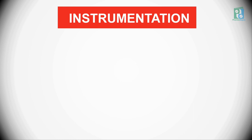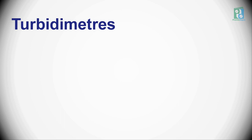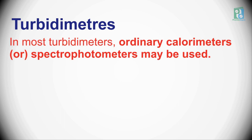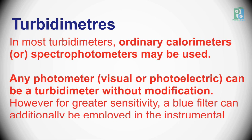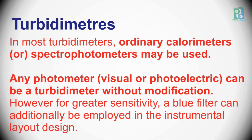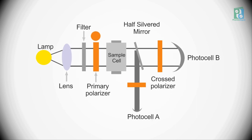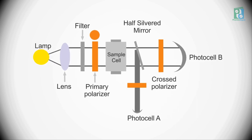Let's see the instrumentation of Turbidometers and Nephelometers. In most turbidometers, ordinary colorimeters or spectrophotometers may be used. Any photometer, visual or photoelectric, can be a Turbidometer without modification. The instrumental layout design includes a lamp, lens, filter, primary polarizer, sample cell, photo cell A and photo cell B, half-silvered mirror, and crossed polarizer.